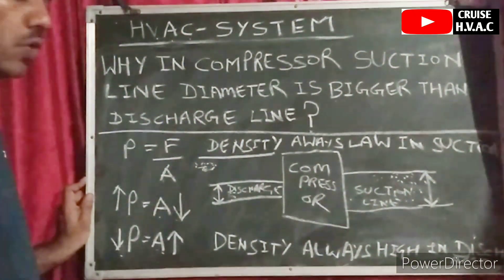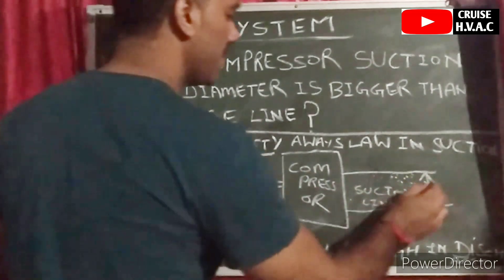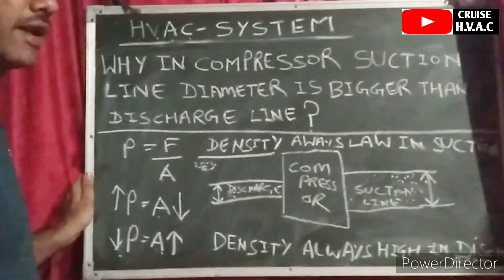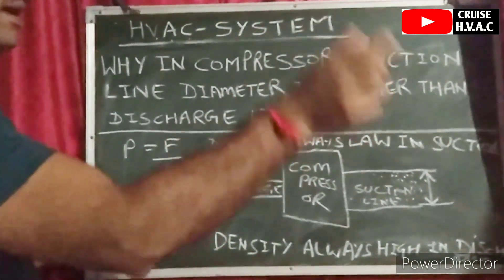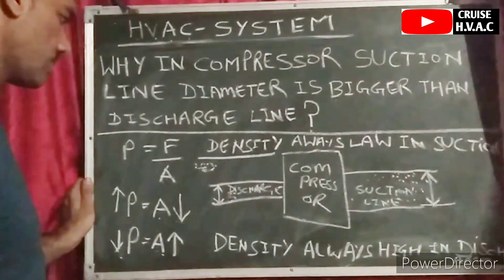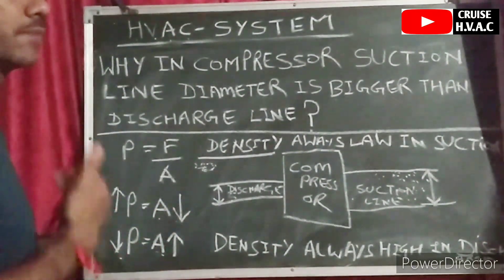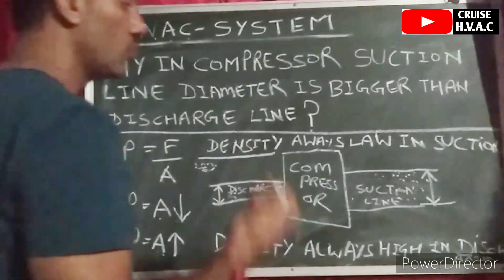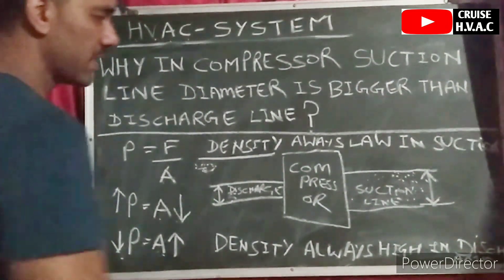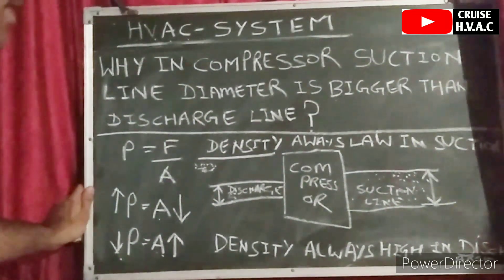So I hope you guys understand: always in the compressor, the suction line diameter is bigger compared to the discharge line. You can easily identify which is the suction line and which is the discharge line when you are at work — this is very important. Always remember: suction line diameter is bigger than the discharge line. This is a very common and important thing that will help you a lot when working with a compressor. Thank you so much.